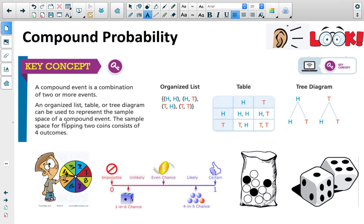Just a reminder, compound probability is an event or a combination of two or more events. We used organized lists today. We used tables, and we used tree diagrams. This example dealt with flipping two coins. And this is the same scenario with different representations. If you have the list, you could get heads, heads, or heads, tails. You can get tails, heads, tails, tails. You could have this table and then just mark the meeting points, or you can draw a tree diagram.